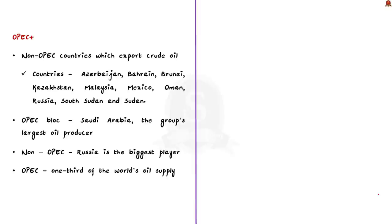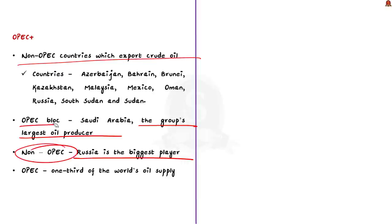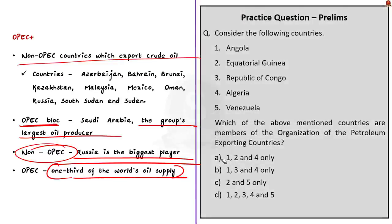Coming to OPEC Plus: the non-OPEC countries which export crude oil are termed as OPEC Plus countries. It includes countries like Azerbaijan, Bahrain, Brunei, Kazakhstan, Malaysia, Mexico, Oman, Russia, South Sudan, and Sudan. Remember, the OPEC block is nominally led by Saudi Arabia, which is the group's largest oil producer. But Russia is the biggest player among the non-OPEC countries. Note that OPEC accounts for around one-third of the world's oil supply. Whereas with the inclusion of non-OPEC countries, the total share of global oil covered by it is nearly half of the world's oil supply.